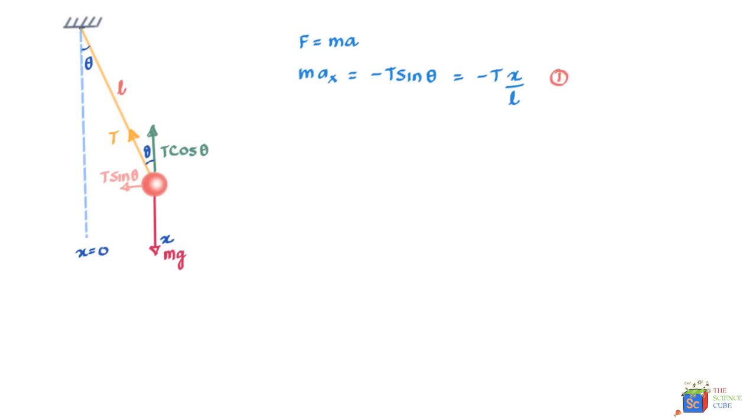If you were to write Newton's second law of motion for Y direction, what we get is m*ay, where ay is the acceleration of the ball in the Y direction, should equal T cos theta, which is acting in the upward direction, minus mg, which is acting in the downward direction. This is the second equation in the Y direction.